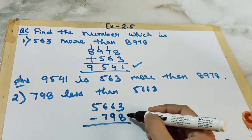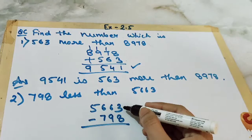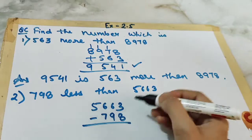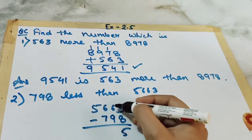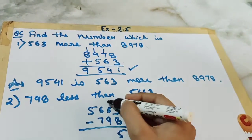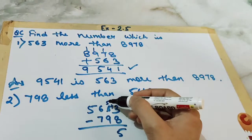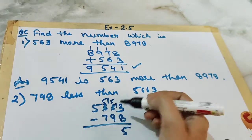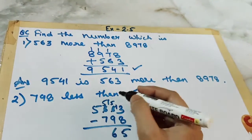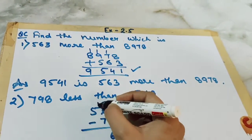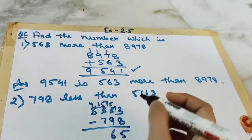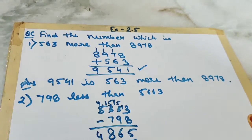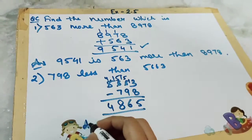3 minus 8 — 8 is not getting subtracted by 3, so we have to take borrow. This is now 13. 13 minus 8 is 5. And this is now 5 — it is also not subtracting, so we have to take borrow. 15 minus 9 is 6. Again we have to take borrow. 15 minus 7 is 8. And what is left here? 4. So we got the answer.